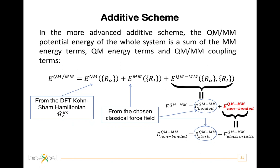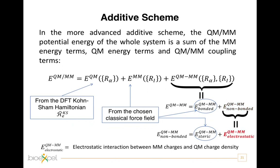Similarly, the steric term — E_QM/MM steric — is usually described by a Lennard-Jones potential, and the parameters come from the force field used in the MM part. The rest of the non-bonded interaction, that is the interaction between quantum and classical atoms separated by three or more atoms in the topology, is included in the electrostatic term. This is really an interaction between classical partial charges in the MM region and the quantum charge density.